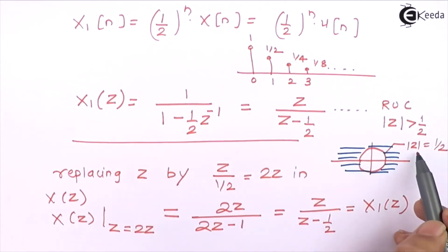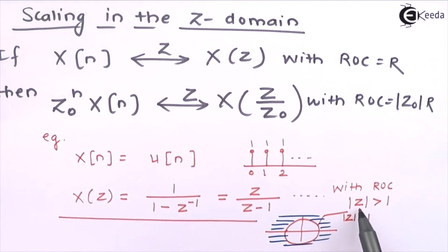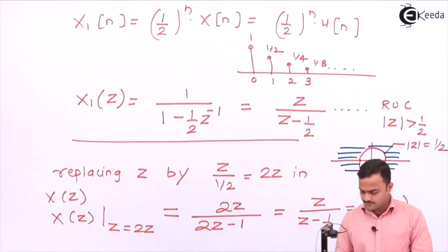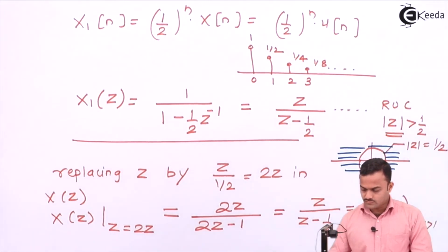And over here also, if I replace Z with 2Z, what I will get? The ROC will be mod 2Z greater than 1, that implies mod Z greater than half, which is the ROC of this.